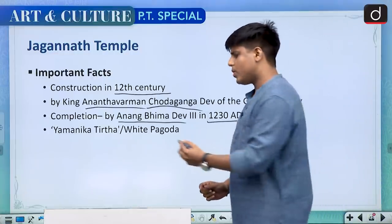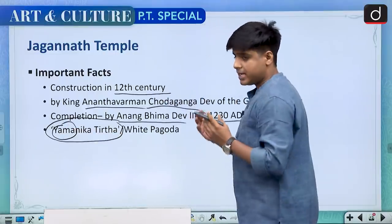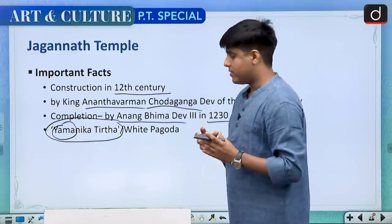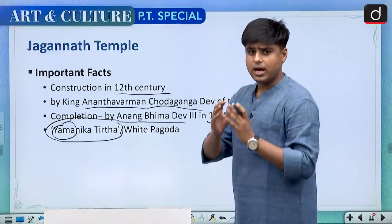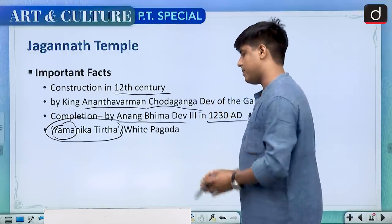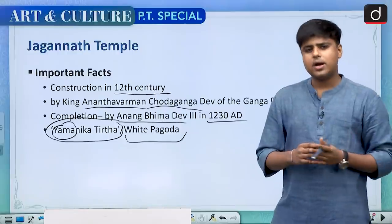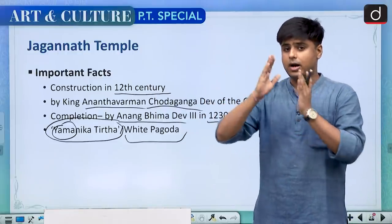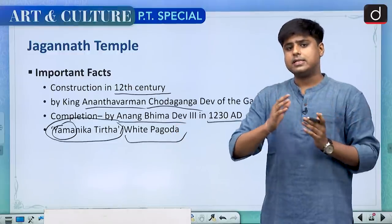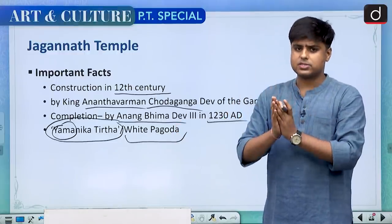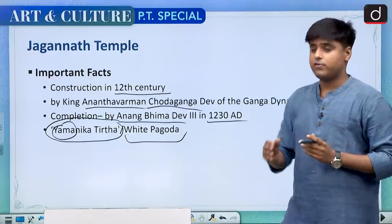The Jagannath temple is also known as Yamanika Tirth because Yama, the Digpal of the south and god of death — even the fear of death is not allowed within the premises of this temple. It is also called White Pagoda. Along with the Black Pagoda, which is the Konark temple, White Pagoda and Black Pagoda served as landmarks for seafarers of the Bay of Bengal.